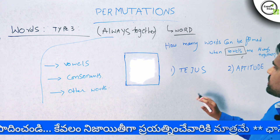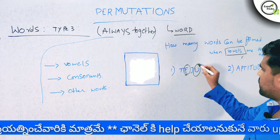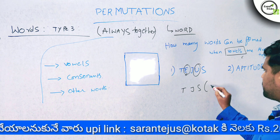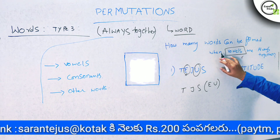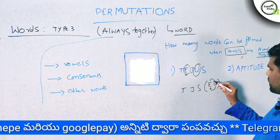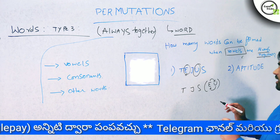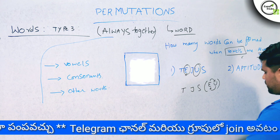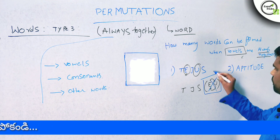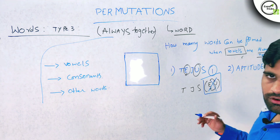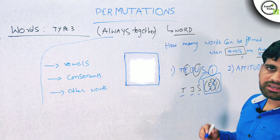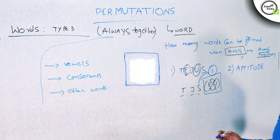The vowels can be arranged when they are always together. We call the vowels E and U. When vowels are always together, they must always be together. If you have two vowels, you can treat them as one single unit. So you have T, J, S and this group — four units total.